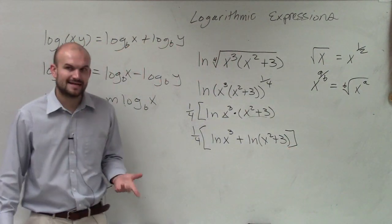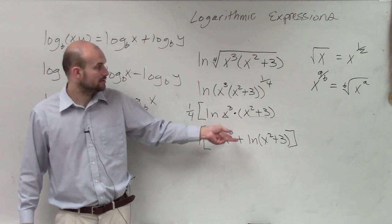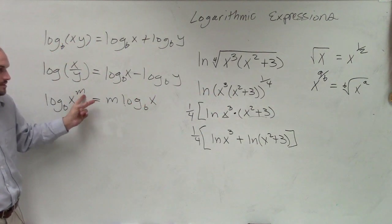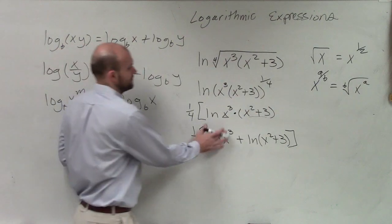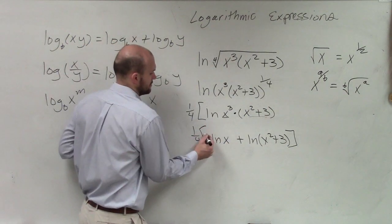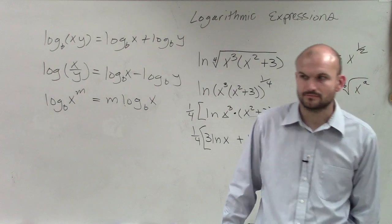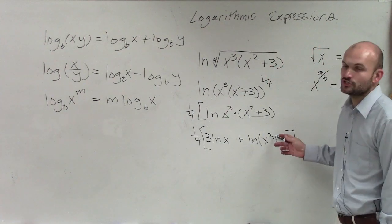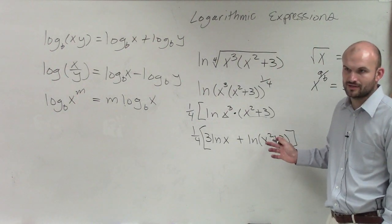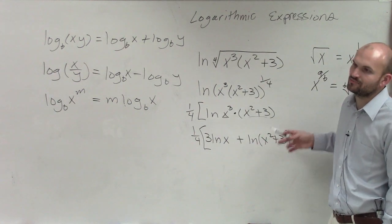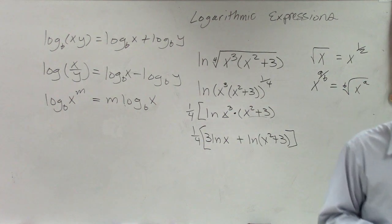And then, ladies and gentlemen, last step — what can we do with this 3? Last rule: bring it down in front. You can't bring down the 2 in front here, because you're not taking the logarithm of x squared — you're taking the logarithm of x squared plus 3. So it's separated, so you can't bring down the 2.